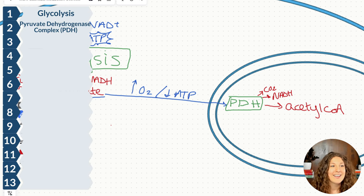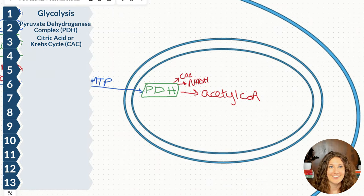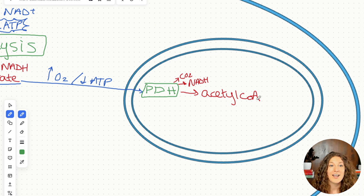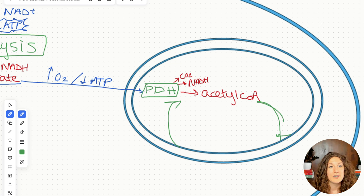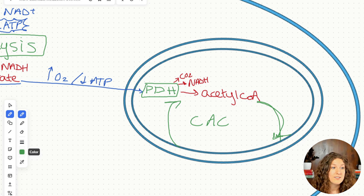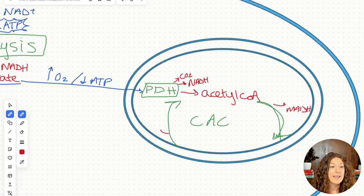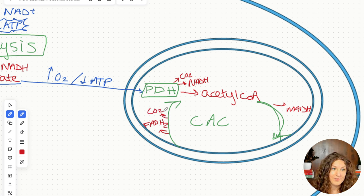Our next pathway is the citric acid cycle, or Krebs cycle, and it's also in the mitochondria. The citric acid cycle is a cycle — I draw it with arrows instead of a box. It starts with acetyl-CoA and it produces NADH, FADH2 — which is another electron carrier — and CO2. But it's a cycle, so it loops right back around to acetyl-CoA.